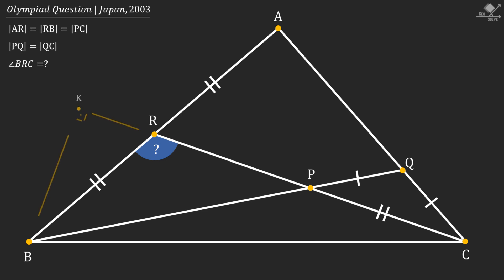First extend line segment RC and drop a perpendicular from point B at point K. And then drop another perpendicular from point A to line segment RC at point H.